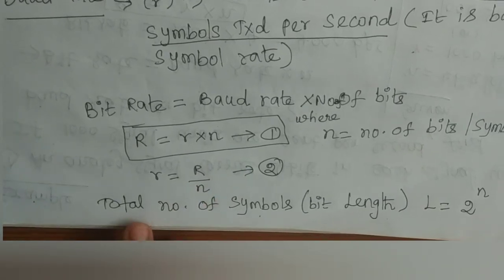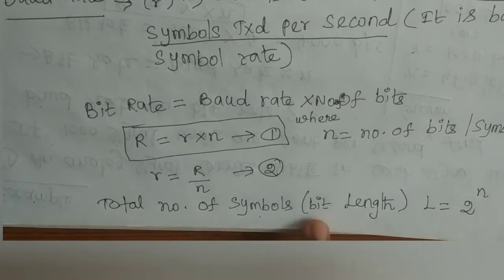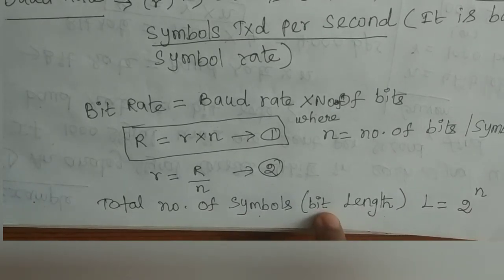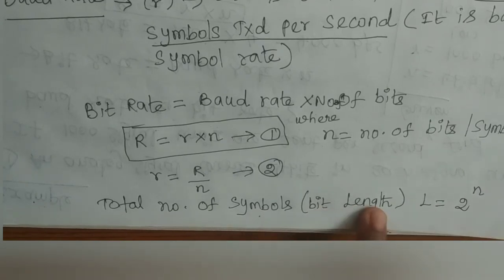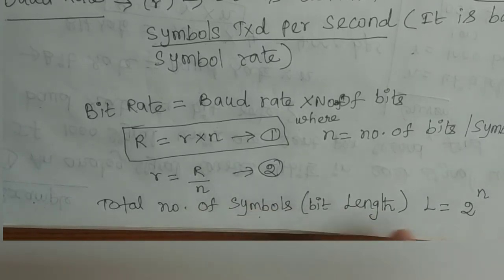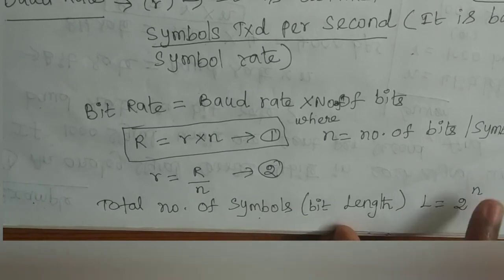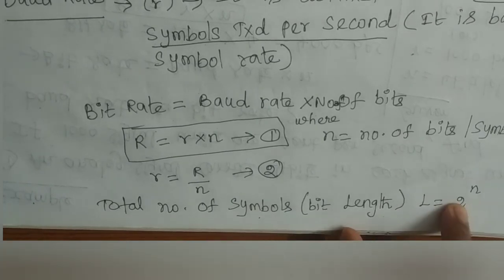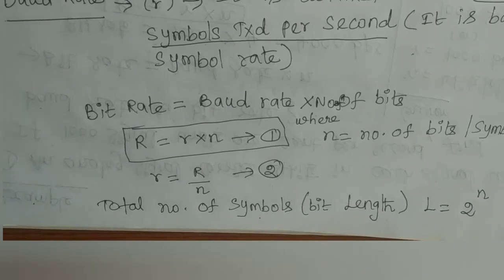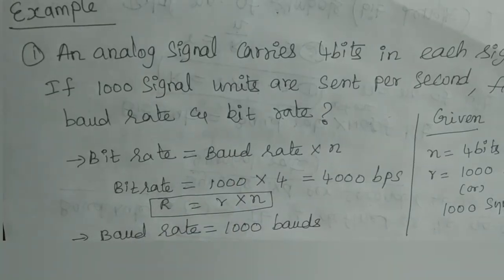We can also find the total number of symbols. In some books they may refer to this as bit length instead of total number of symbols. It is denoted by capital L, and is equal to 2 power n, where n is the number of bits.